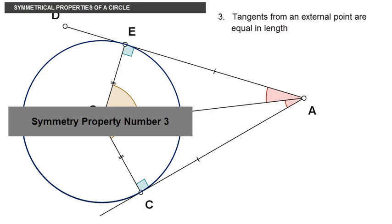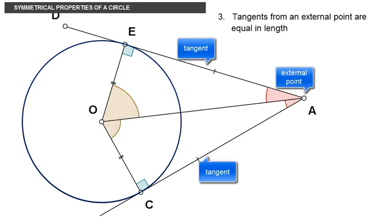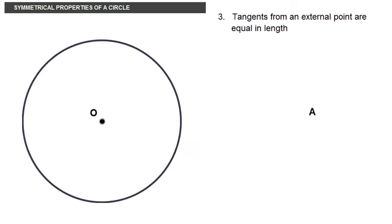The third property states that the tangents from an external point to the circle are equal in length. We have learned before that you can draw two tangents to a circle from one external point. From an external point A, two tangents can be drawn.